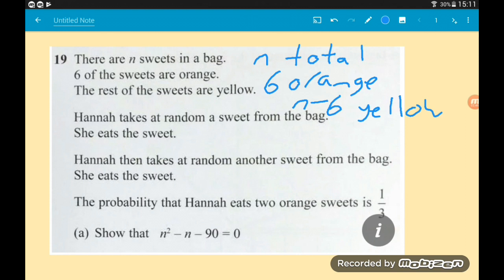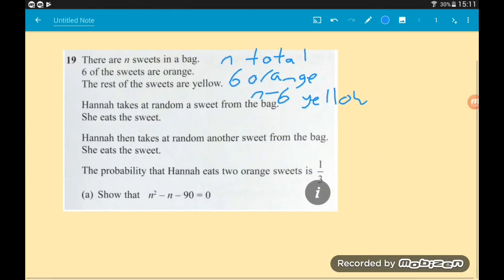The information is there, it's very hidden. We're told the probability that she takes two orange sweets is one third. What we need to think is how can we turn that probability into algebra? If we do that, then we can get ourselves an equation and do what we like to do with equations. On her first selection, what is the probability of her taking an orange sweet? There are six orange sweets out of n total sweets. So the probability of her picking an orange sweet on her first selection is six over n.